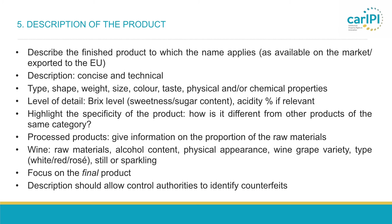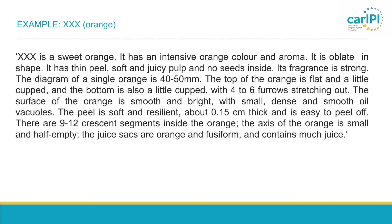Here is an example from a non-EU GI protected via an agreement — anonymized as announced earlier. The product at stake was an orange. As you can see in the text, the description contains information on the product type, quite detailed information on the physical appearance of the product, on the aroma or fragrance, on the shape, on the consistency, and on the taste. It also provides some measurements. This description was considered technical and precise enough to identify the product on the market.